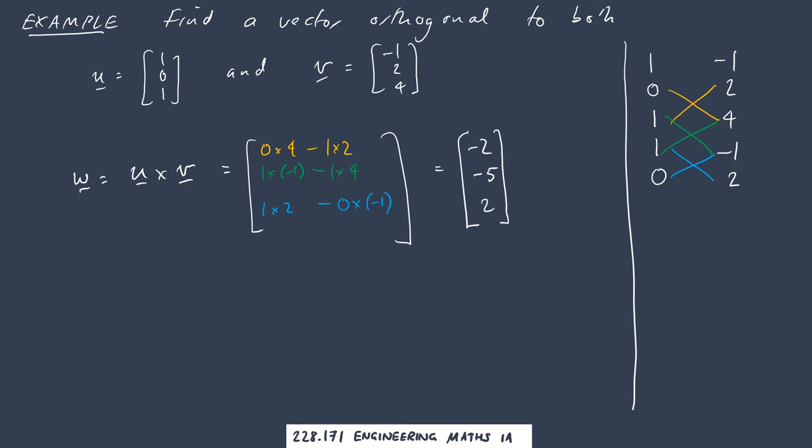Now if I've done it correctly, then we should find this vector here that we just calculated is orthogonal to both u and v. So let's just check that: u dot w is going to be [1, 0, 1] dot [-2, -5, 2] which equals negative 2 plus 2 which equals 0.